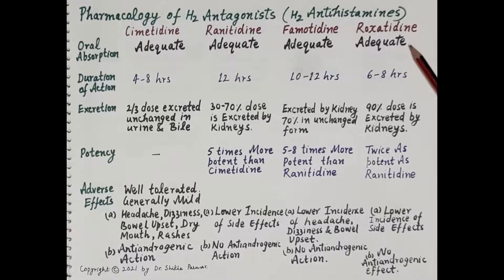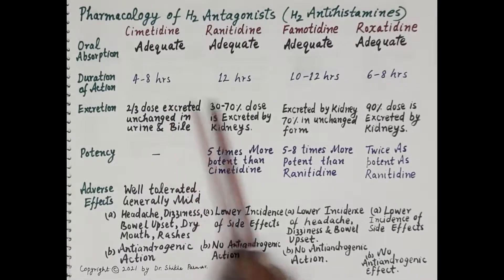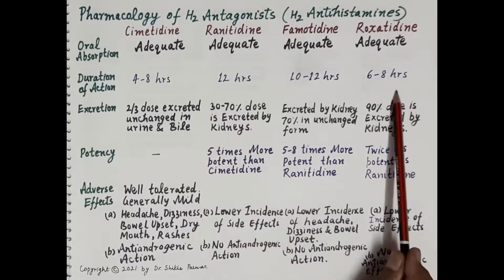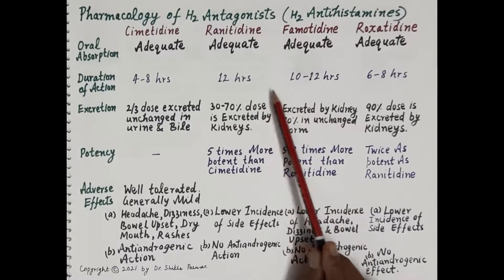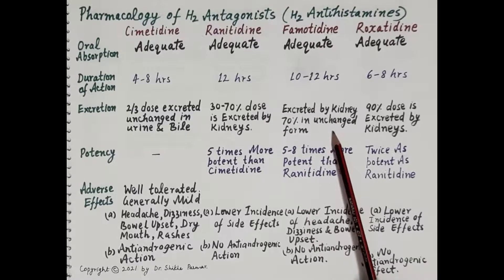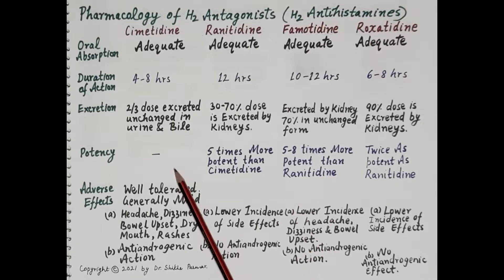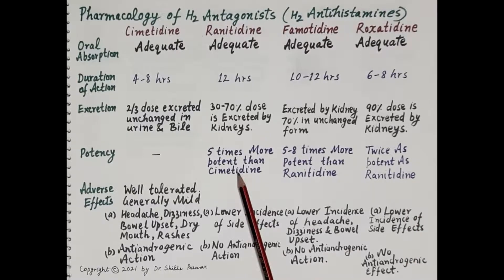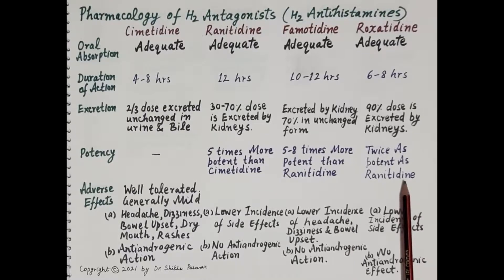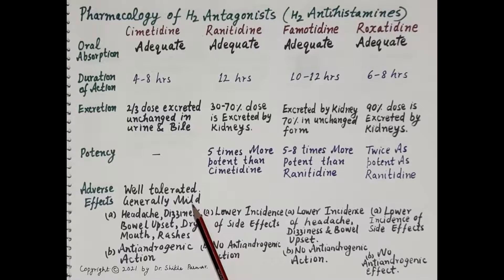All four H2 antagonists are adequately absorbed orally. Cimetidine and roxatidine have a short duration of action, while ranitidine and famotidine have a long duration of about 12 hours. All H2 antagonists are primarily excreted through the kidneys. Regarding potency: cimetidine is the least potent; ranitidine is five times more potent than cimetidine; famotidine is five to eight times more potent than ranitidine; and roxatidine is twice as potent as ranitidine, making it the most potent.